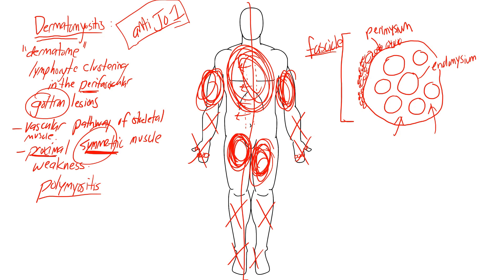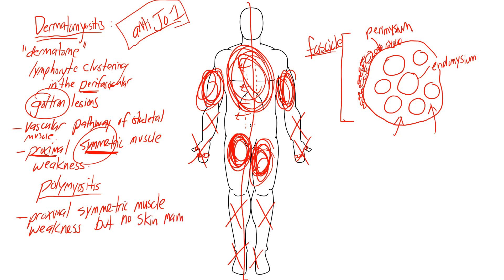Moving on to polymyositis: you're going to see the same proximal symmetric muscle weakness as in dermatomyositis, but with no skin manifestations. That should be easy to remember because dermatomyositis has 'dermatome' in the word, signaling skin involvement. Polymyositis doesn't have that, but it still has the proximal symmetric muscle weakness. Look at the word 'poly' — it means many — so think 'many myocytes.'